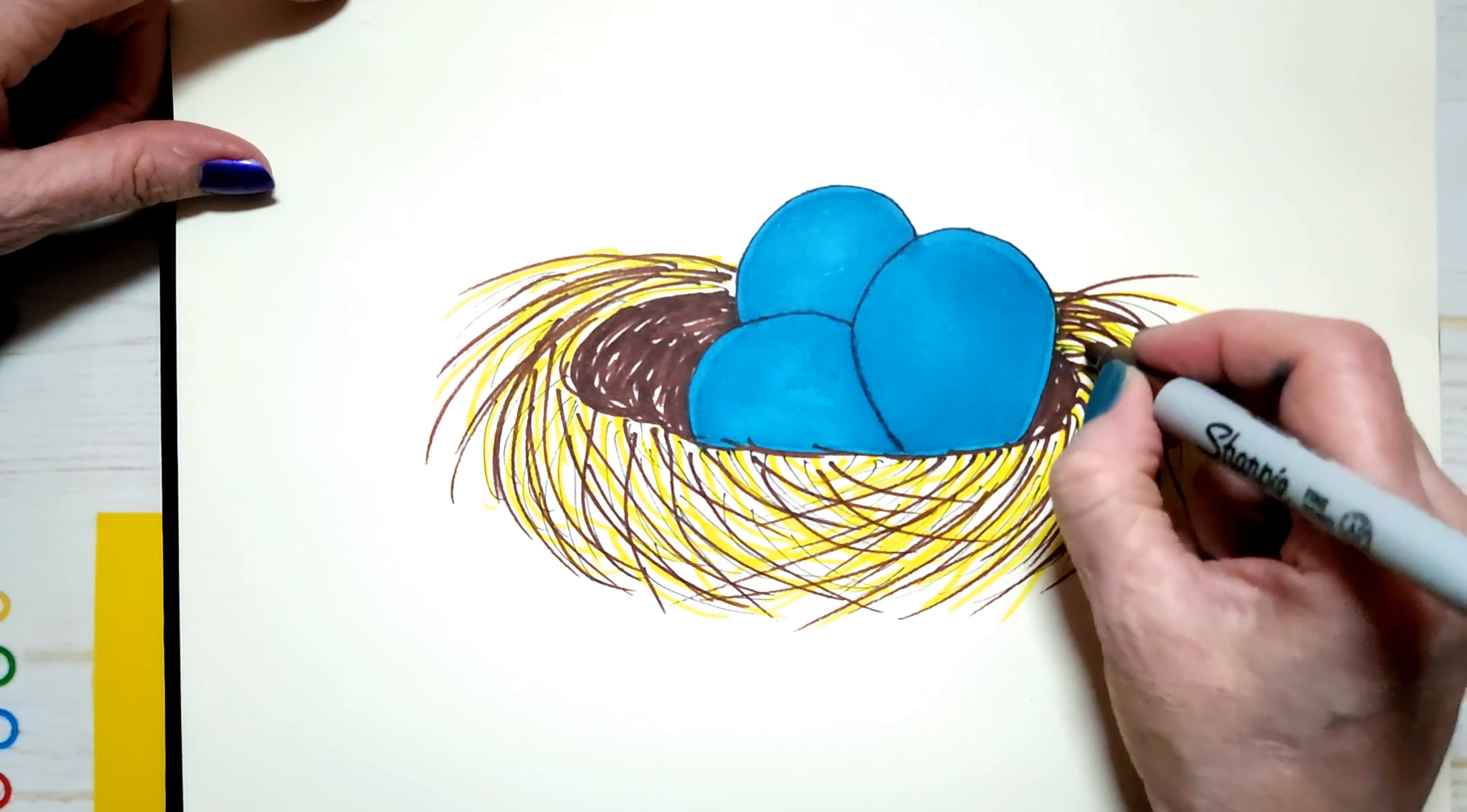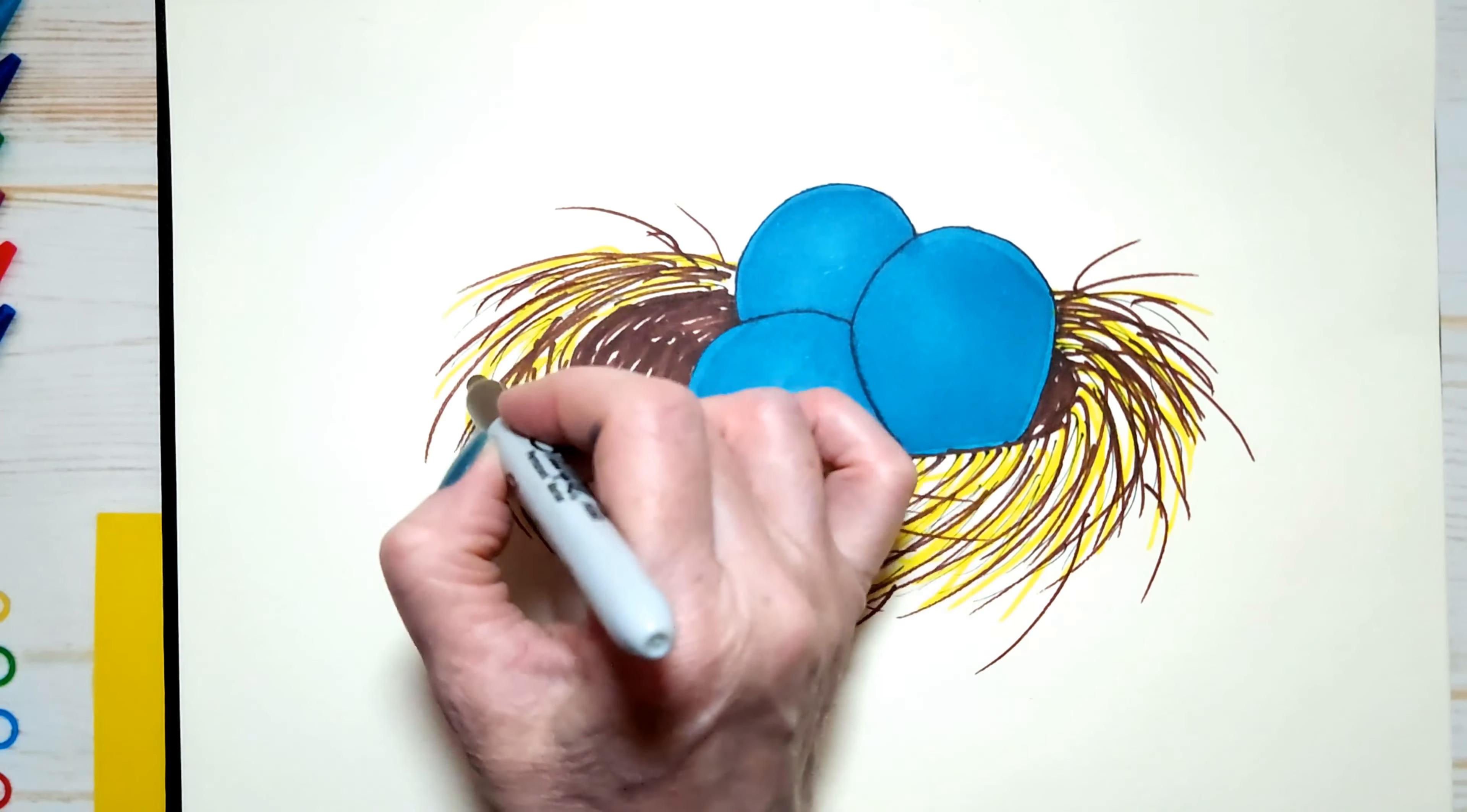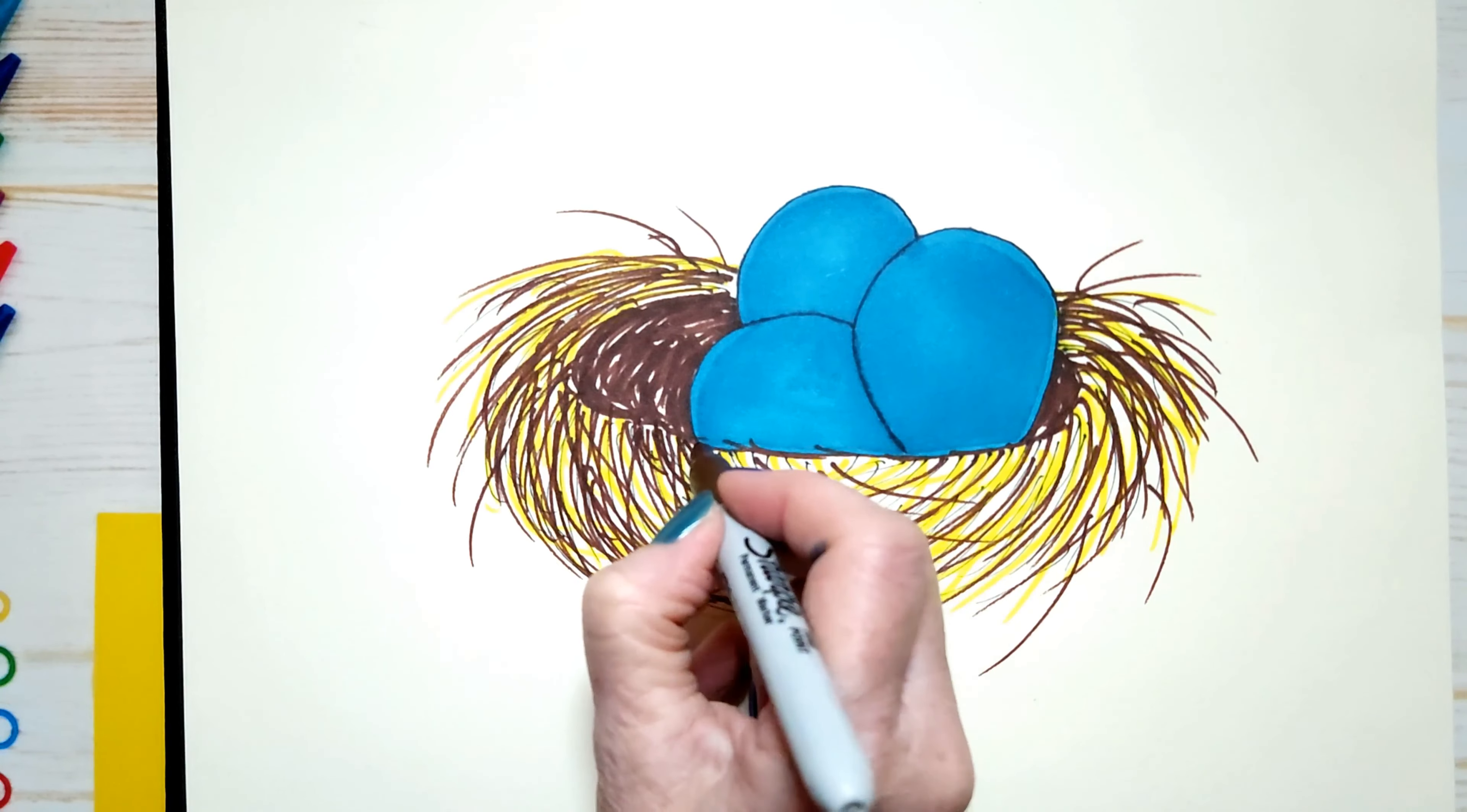And I want a few twigs sticking out. Like that. This is very relaxing. Very, very relaxing. Alright, I'm going to be careful where the eggs are.